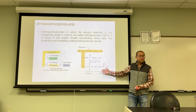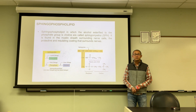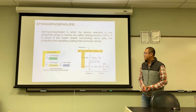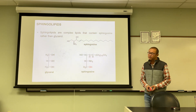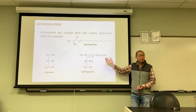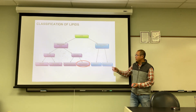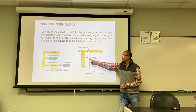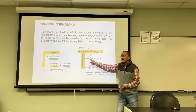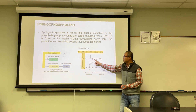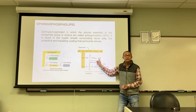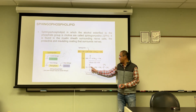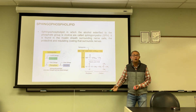So this sphingolipid has: the long chain from sphingosine, a fatty acid linked to the nitrogen via an amide bond, and a phosphate group on the OH, with choline forming a diester on the phosphate — making this a phosphodiester arrangement very similar to that in phosphoglycerides.